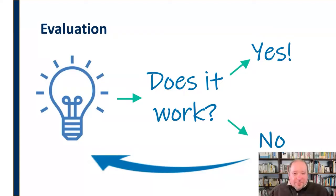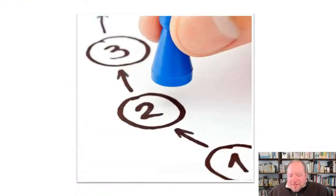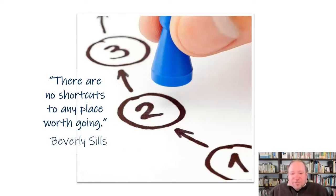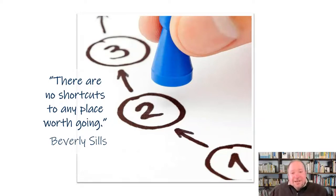As much as anything, we need to remember that there are steps to this — no shortcuts, really. As Beverly Sills said, there are no shortcuts to any place worth going. If it's worth going there, you're going to have to put in the work. And it's continuous and cyclical. But it's exciting and it's fun. So be sure that you are giving proper focus and attention to all four stages — Research, Planning, Implementation, and Evaluation — and that they feed back into one another.